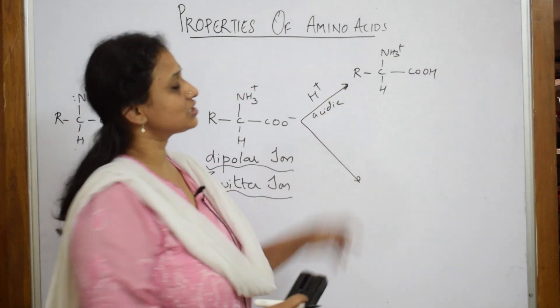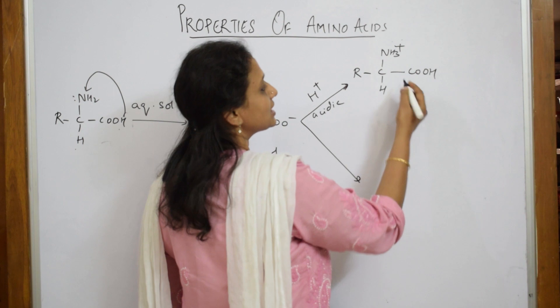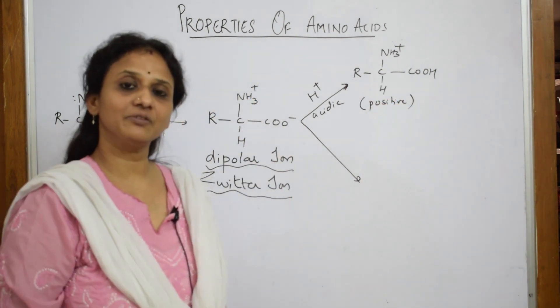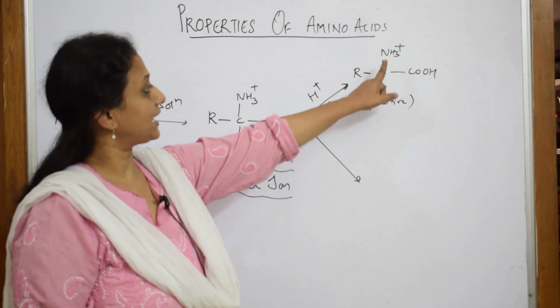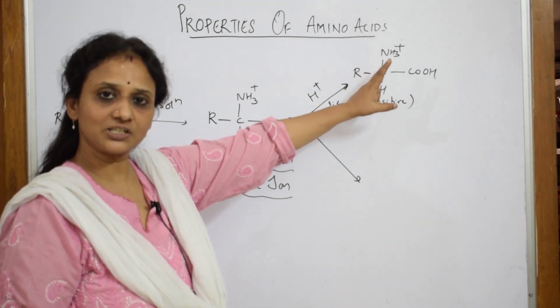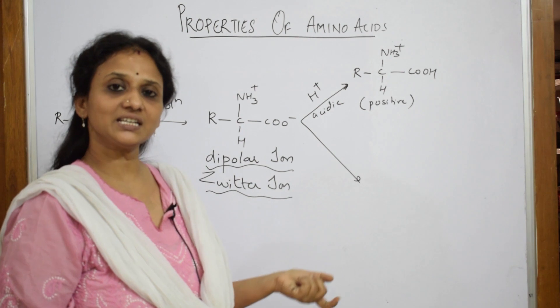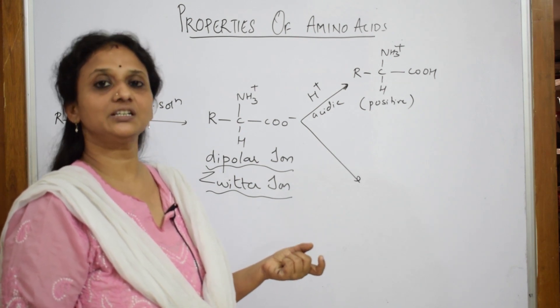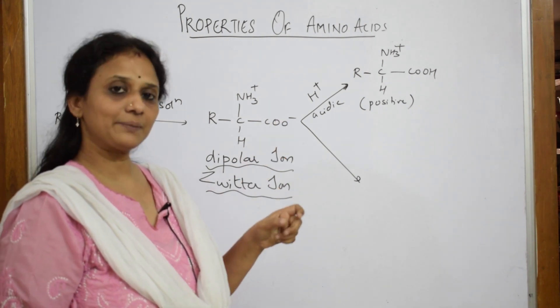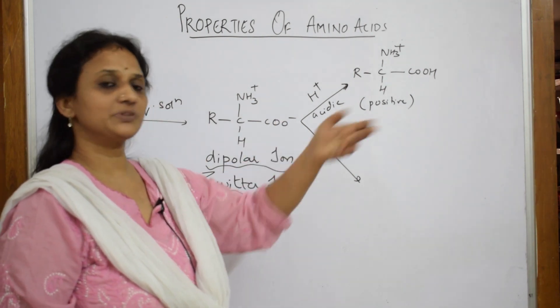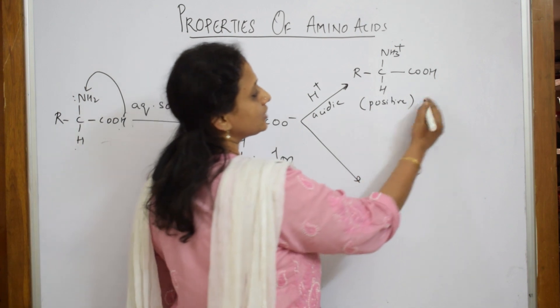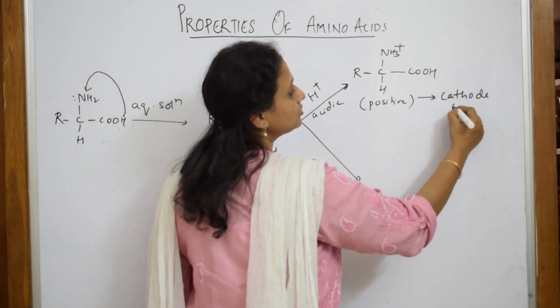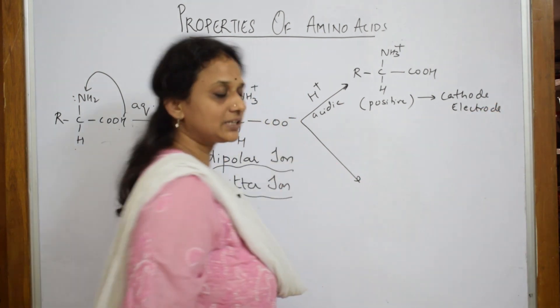Now what is the overall charge on this? The overall charge is positive. That means which electrode will it go? It's a cation overall charge. When I take this amino acid, it's a process called electrophoresis, which you have studied in surface chemistry. It goes to the opposite electrode. This is your positive ion, it goes to cathode electrode.